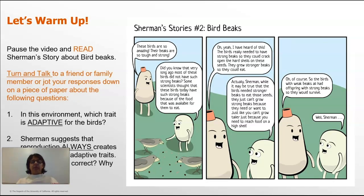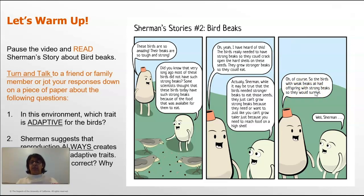The trait that is adaptive for these birds — the one that helps them survive — is their strong and tough beaks. That's because their strong and tough beaks allow them to eat the food that is available in their environment. In terms of reproduction always creating individuals with adaptive traits, I'm not quite sure if birds with weak beaks all had offspring with strong beaks so that they would survive. I feel like we need more evidence to see if Sherman is correct.